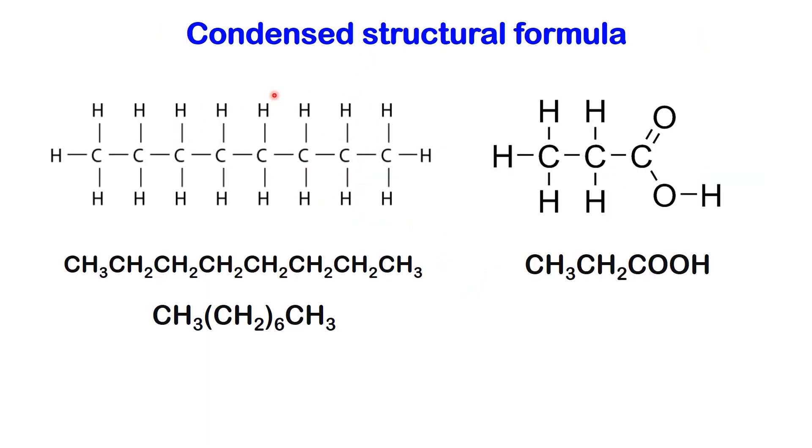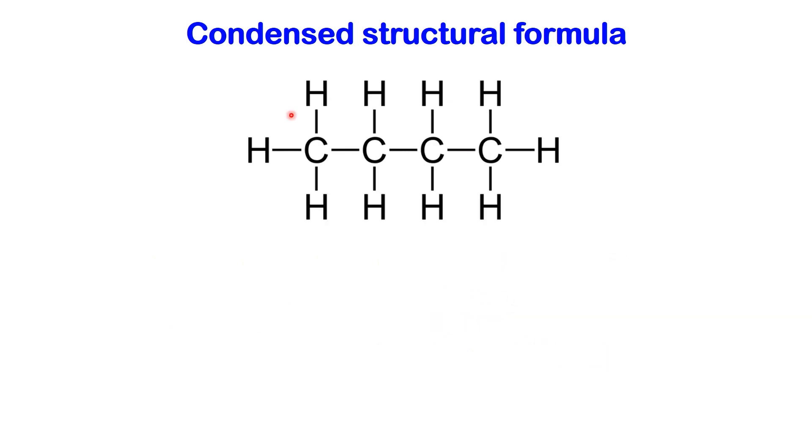The displayed formula mentioned earlier can be unwieldy. It can be further streamlined by omitting some or all of the covalent bonds and indicating the number of identical groups attached to an atom with a subscript.